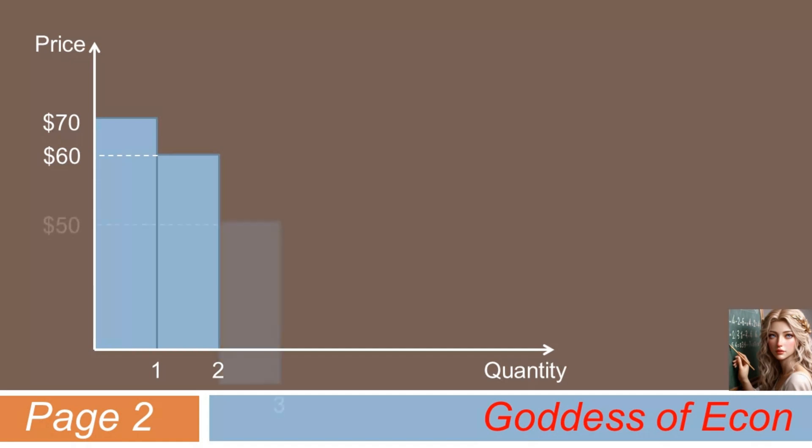Similarly, if the item were sold at the price of $50, there'd be a total of three buyers. Lastly, in the case where the item were sold at the price of $40, the quantity demanded would increase to four, as even Jermaine, the cheapskate, would buy it.